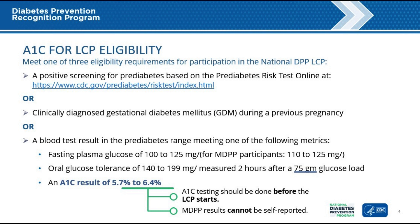For today, we are only going to look at A1c levels, but please see the Diabetes Prevention Recognition Program, DPRP, standards for a full list of eligibility requirements. If a person has an A1c level in the 5.7% to 6.4% range, they have prediabetes and can participate in the National DPP LCP. Note that this test needs to be done within one year before participant enrollment in the program. If the participant is enrolled in the Medicare Diabetes Prevention Program, MDPP, the blood test result cannot be self-reported.